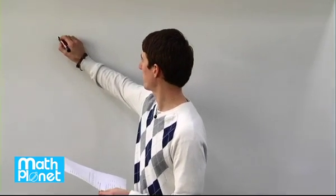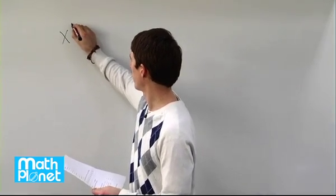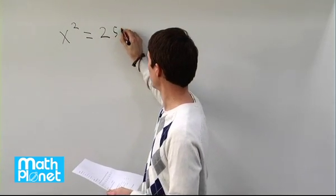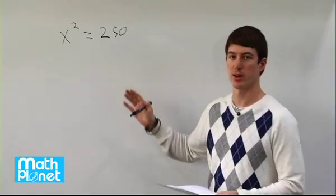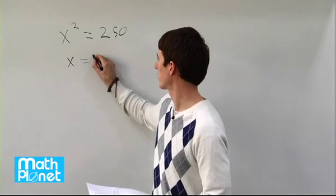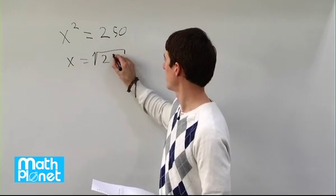Here we want to see what the value of x is if x squared is 250. In other words, we need to find the approximate value of the square root of this. So x is the square root of 250.